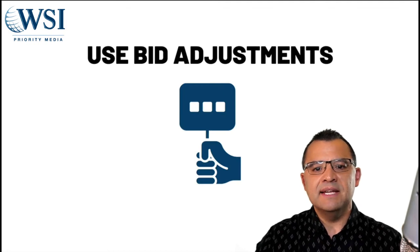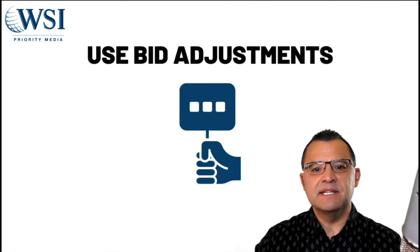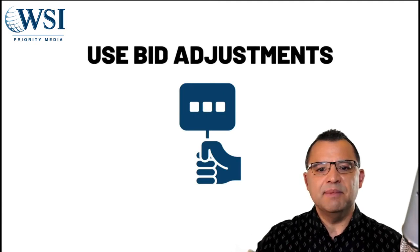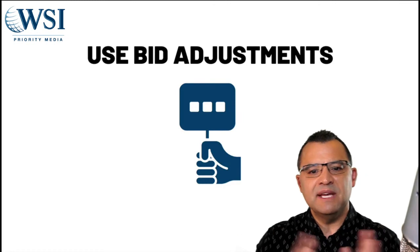The next item is bid adjustments. Using your bid adjustments, simply adjust those bids where needed so that you can get more leads within more profitable zones — and that'll help you work around the budget limit as well.